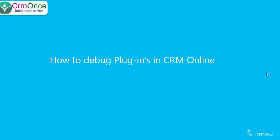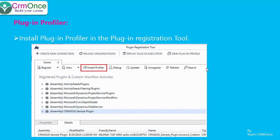Open your CRM online instance and the plugin registration tool, and connect the plugin registration tool to your CRM online instance. If you've already been practicing debugging, you might have the profiler installed. If you're watching this video, you likely haven't — so you'll see a button that says 'Install Profiler.' Go ahead and click that. This will set up the profiler in the background, which will take only a few seconds.